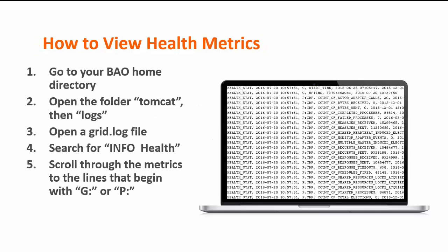To view the health metrics, you just need to open the grid.log file, which is in your BAO home directory, then the folder Tomcat, then logs. Search for 'info' followed by two spaces and then the word 'health'. This line occurs at the beginning of every instance of the health logging. Then scroll through those lines until you see lines that begin with G or P, as in the screenshot here. The grid.log exists on every kind of peer and each peer will have roughly the same information, differing only in when they logged it usually.